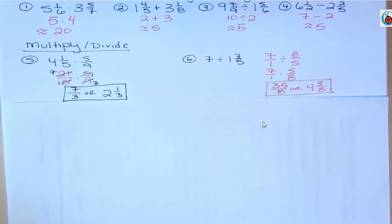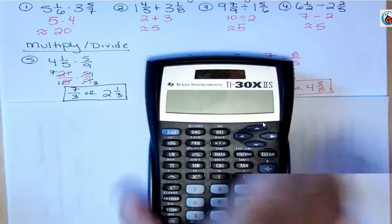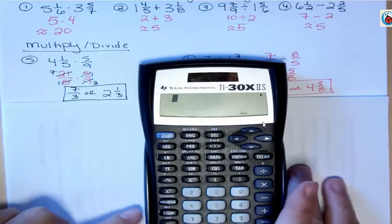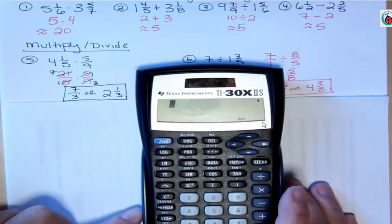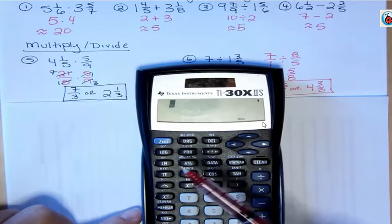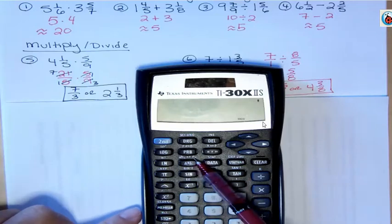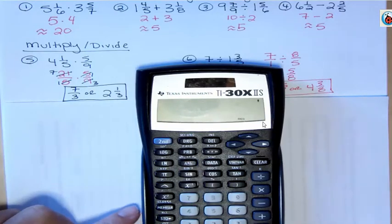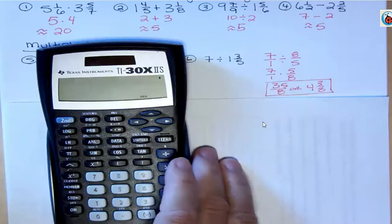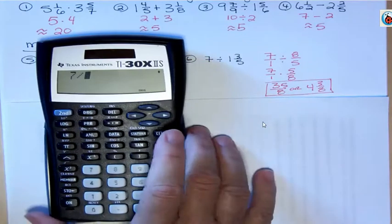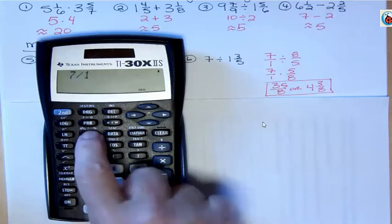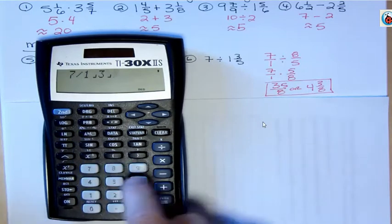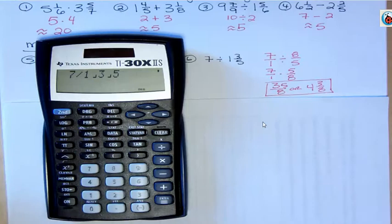You can change back and forth between an improper. I use different calculators. I'm trying to, you know, I don't know which calculator you have, but let's see. This button up here above the fraction button changes things from mixed numbers to improper. So let's do that last problem. Seven divided by, when you do one and three fifths on this calculator, you do one, hit the fraction button, three, hit the fraction button, five. And that tells it it's one and three fifths. You hit the fraction button between each number and then hit enter.